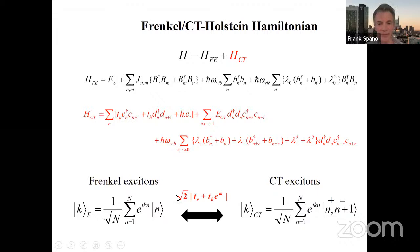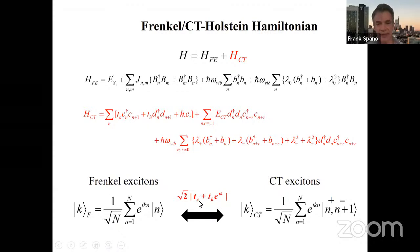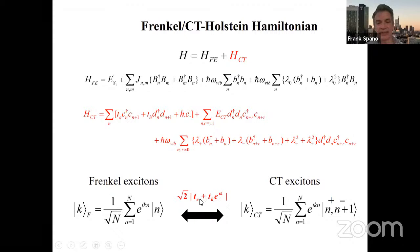The interaction matrix element is very important: it's T_E plus T_H times e^{iK}. At K=0 (the optically allowed state), this is simply the sum T_E + T_H. At K=π, this becomes T_E − T_H. Keep that in mind for what we introduce next.